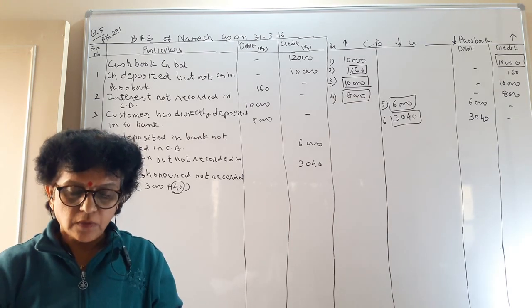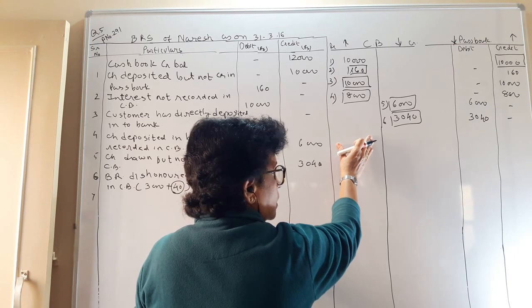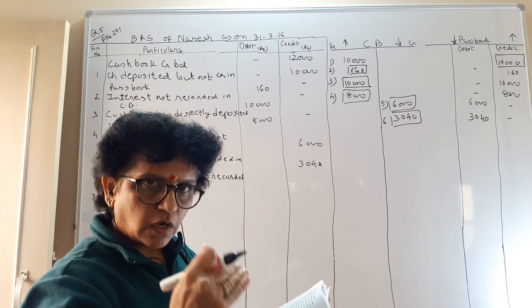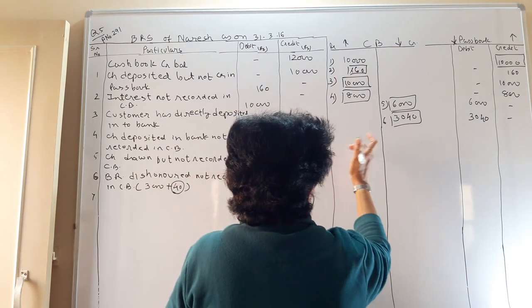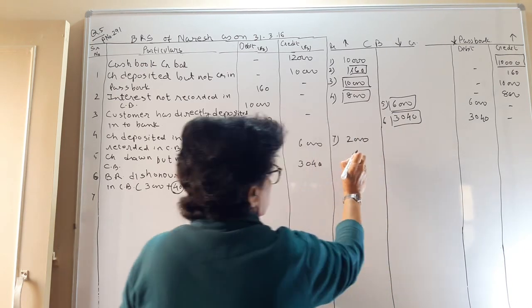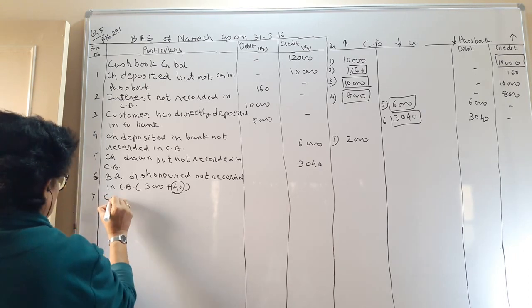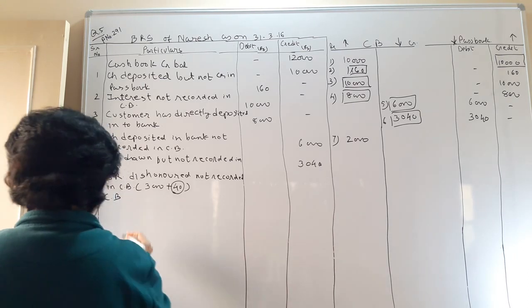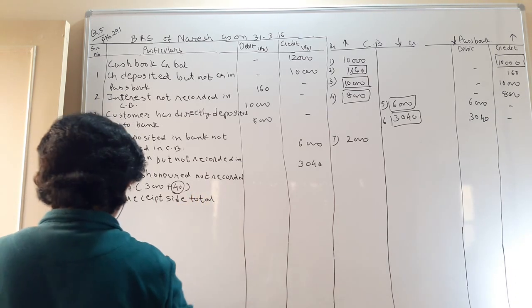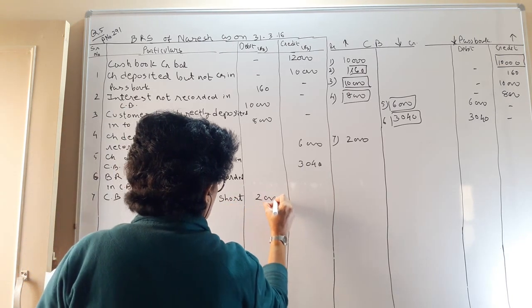Transaction 7: the total of the receipt side of the cash book is short (undercast) by rupees 2,000. 'Short' means undercasted — give the same effect. Receipt side means the debit side, so the debit side is undercasted by 2,000. We debit 2,000 in the cash book; nothing to deal with in the passbook. Entry: cash book receipt side total short — debit rupees 2,000.